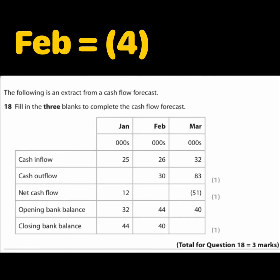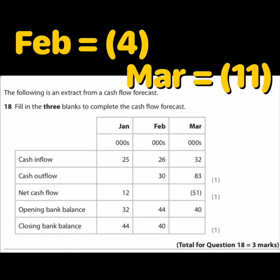With a closing balance of minus £11,000, we don't have enough information to know exactly why, but the business clearly has major outflow problems impacting their overall bank balance. If I were running this company, I'd look at how to reduce outflows or increase inflows. Their inflows are increasing every month, but nowhere near at the same rate as their outflows.